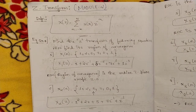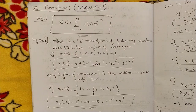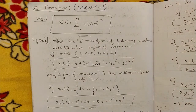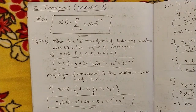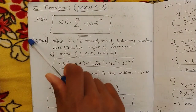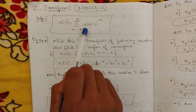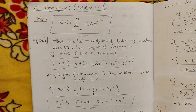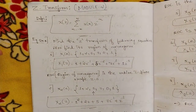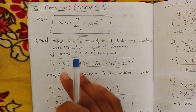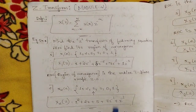Some properties of Z transforms are also there. In the syllabus they have mentioned statements only, in brackets. No detailed problems are required — just the formula or property formula with one simple example problem. The Z transform definition with respect to DSP is: X of Z equals summation from n = minus infinity to plus infinity of x(n) times Z to the power minus n.